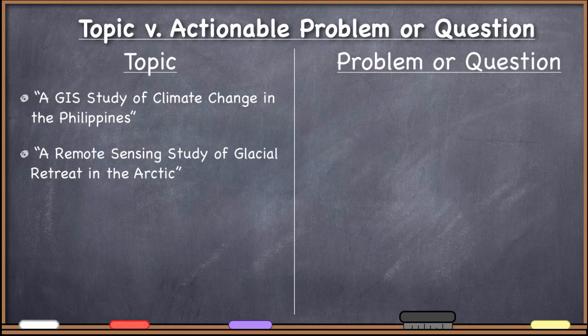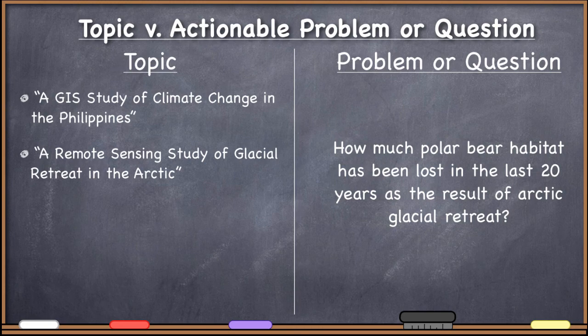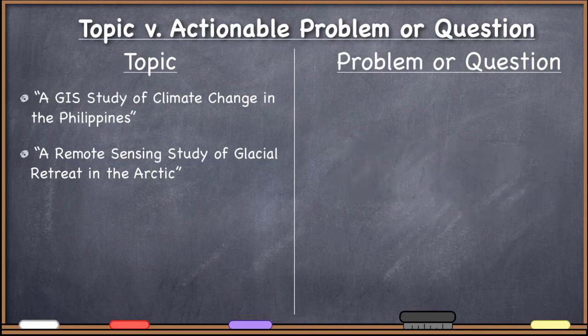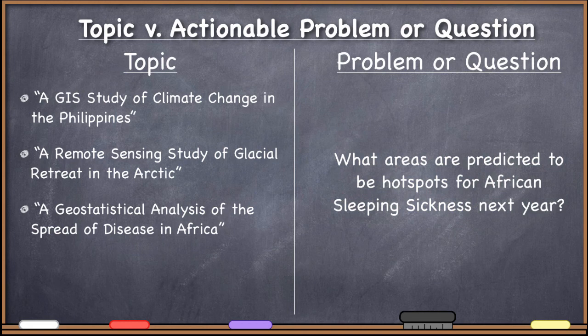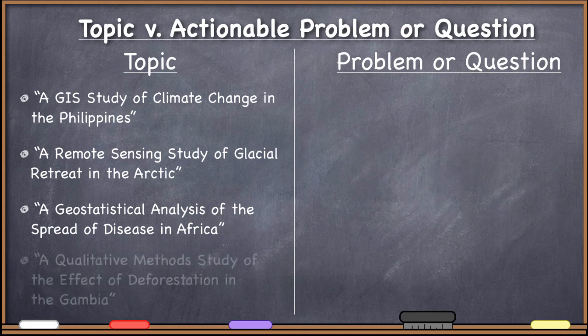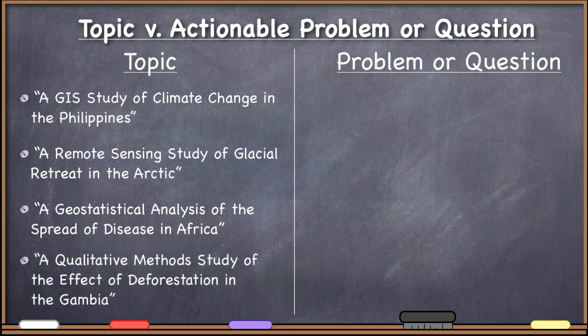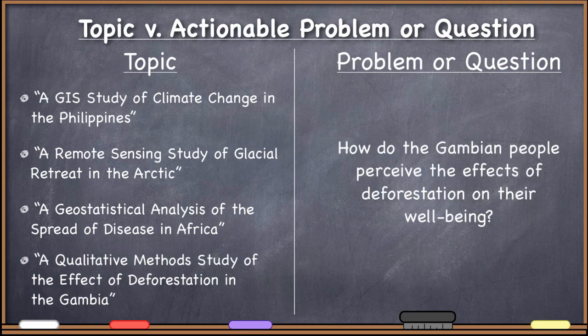Topic: a remote sensing study of glacial retreat in the Arctic. Question: 'How much polar bear habitat has been lost in the last 20 years as a result of Arctic glacial retreat?' Topic: a geostatistical analysis of the spread of disease in Africa. Question: 'What areas are predicted to be hotspots for African sleeping sickness next year?' Topic: a quantitative method study of the effect of deforestation in the Gambia. Question: 'How do the Gambian people perceive the effects of deforestation on their well-being?' These are the differences between topic and problem or question.